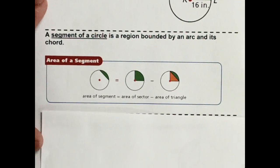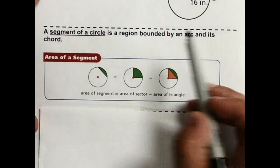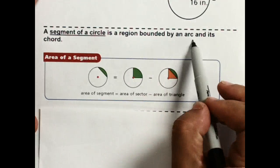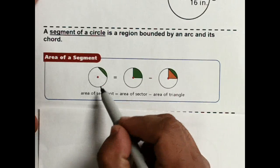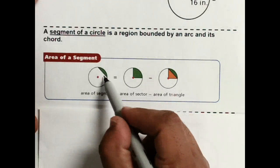All right, now we're going to look at what's called a segment of a circle and that's the region bounded by an arc and its chord. So here's the area of the segment, this little green piece right here.